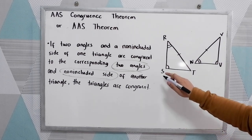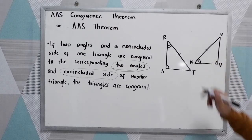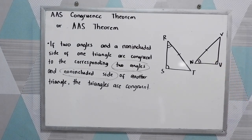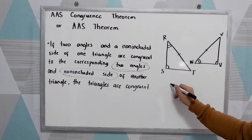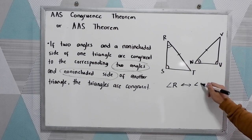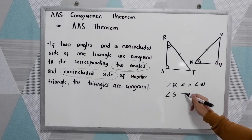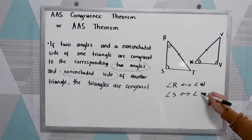We have triangle SRT and triangle UVW. Let us first find the correspondence. We know that angle R corresponds to angle W, and angle S corresponds to angle U.